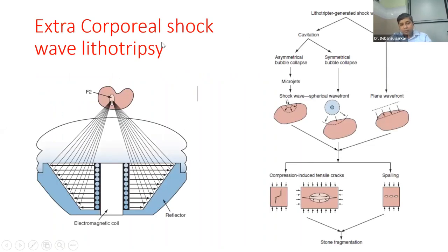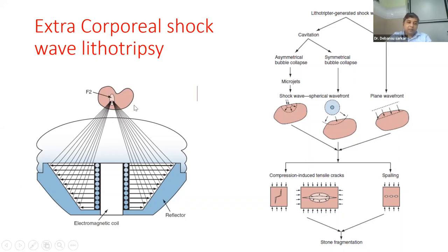This is extracorporeal shockwave lithotripsy. There is an energy source — either electromagnetic, electrohydraulic, or piezoelectric — which generates a shockwave focused at point F2. The patient's kidney and specifically the stone is focused at that F2. The shockwave breaks the stone through multiple mechanisms depending on the energy source. The ultimate effect is that shockwaves cause multiple cracks or bubbles inside the stones — these cracks and bubbles coalesce and lead to stone fragmentation.